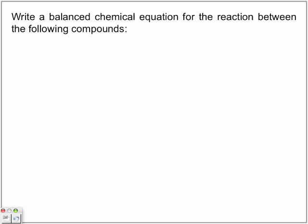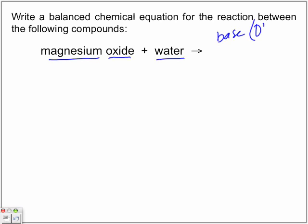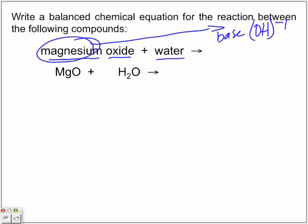So let's write a balanced chemical equation for the reaction between the following compounds. Magnesium oxide plus water. So we're looking for oxide and water. And those are some of our hints that we have one of these special types of synthesis reactions. So we know we're going to form a base. So this magnesium, because we are going to form a base, and remember that bases have the OH. So this magnesium is going to combine with that OH to form magnesium hydroxide.